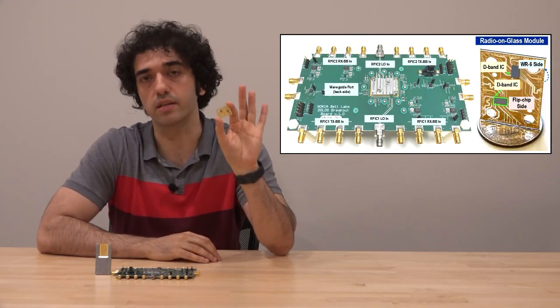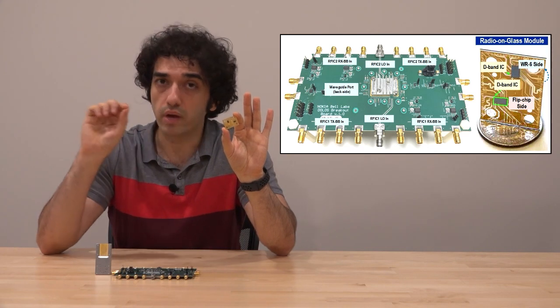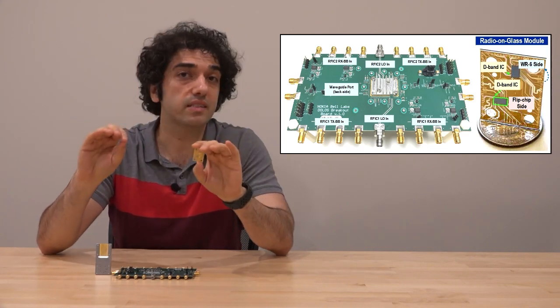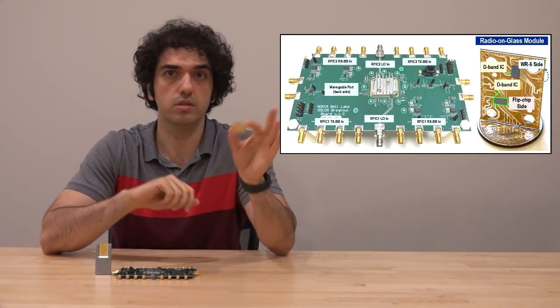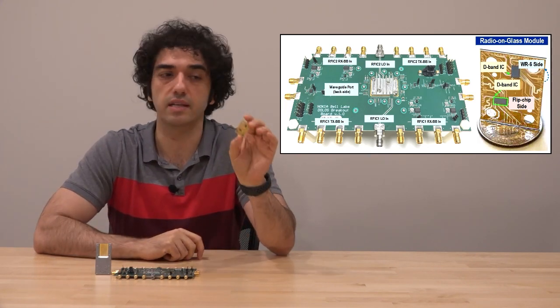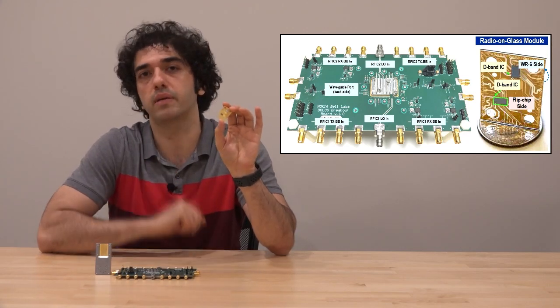So these devices here have an interface loss from the RFIC to a waveguide port of an antenna less than a dB, up to about 150-160 GHz. These are extraordinary numbers, which means that we don't lose a lot of performance by packaging these, which has always been a problem at D-band frequencies.